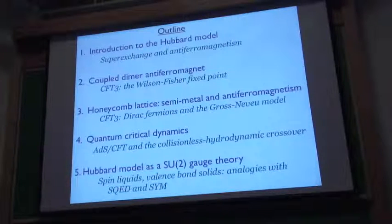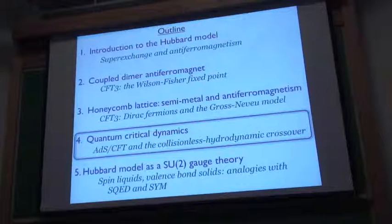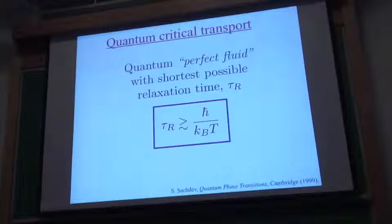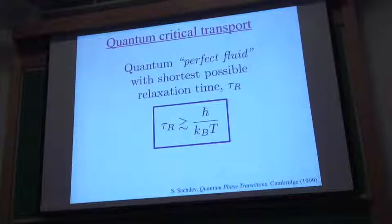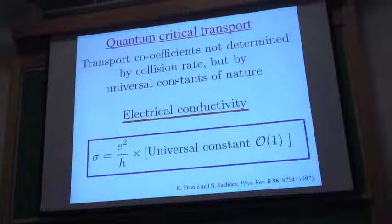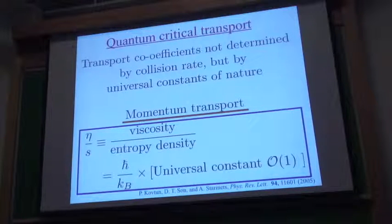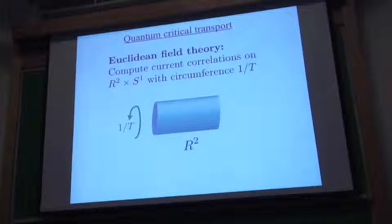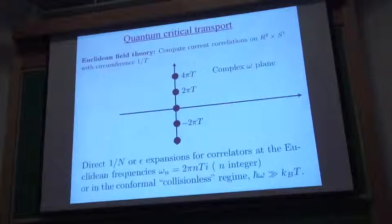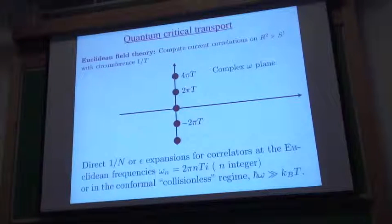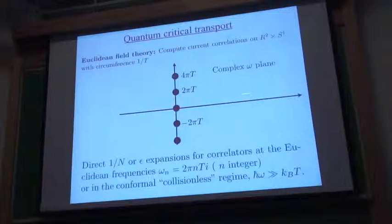Now let's finally translate to AdS/CFT. The quantum critical region is where relaxation times are of order hbar over kT and you get universal conductivities, and also universal eta over s in principle. To compute this, you take Euclidean field theory which is periodic in time with period one over temperature, and in frequency space this gives you a response function at the Matsubara frequencies on the imaginary frequency axis. We want the density-density correlation function on the real axis.